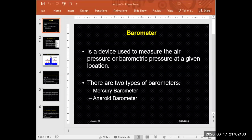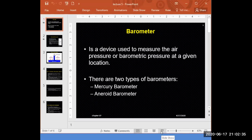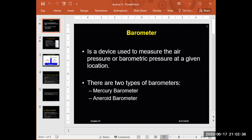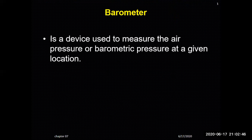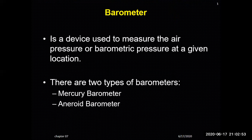Welcome back students. Today our class is about the atmospheric instrument used to measure atmospheric pressure. This device is called a barometer. A barometer is a device used to calculate or find the atmospheric pressure — specifically, it measures the air pressure or barometric pressure at a given location.